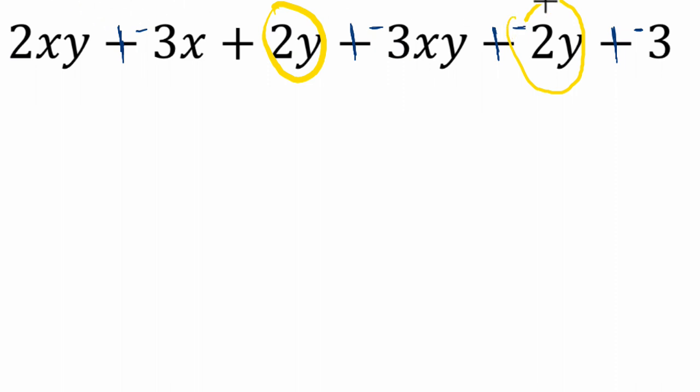I also notice then that we've got negative 3 all by itself, I'll put that first. I also notice that, so that's now taken care of, I circled them as I go.